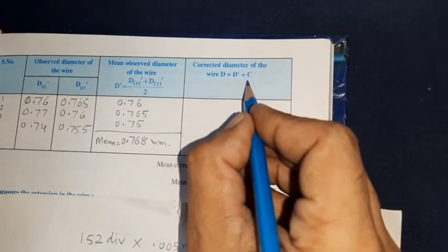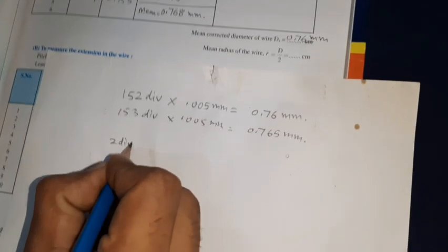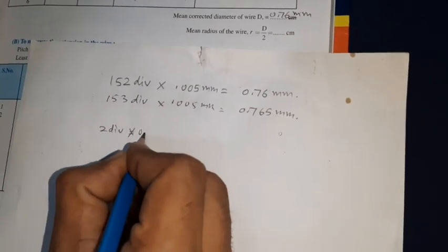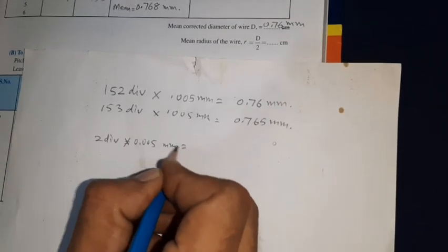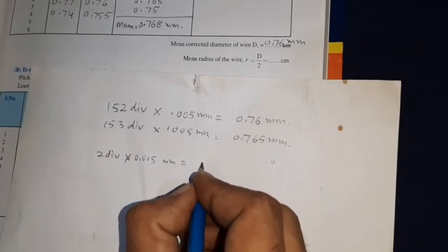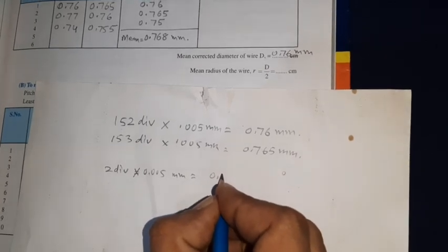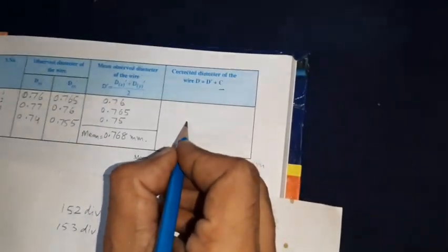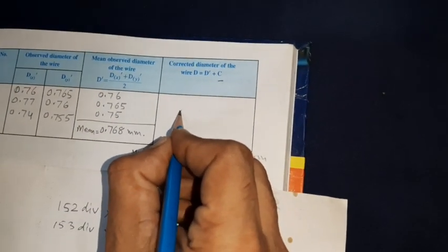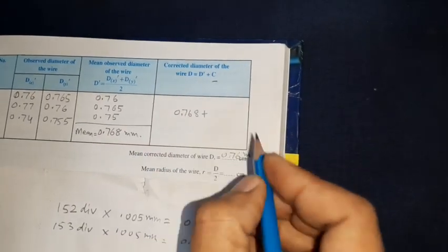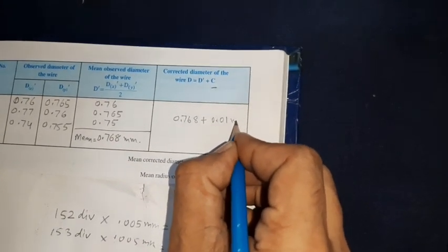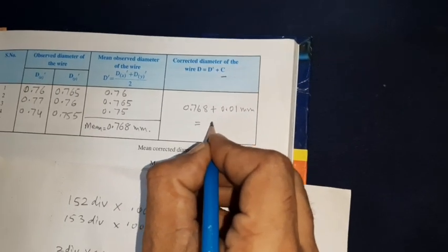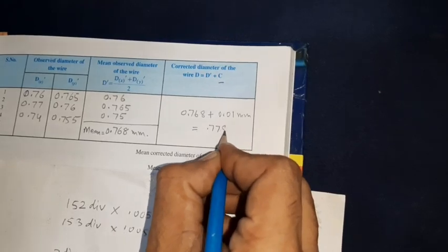So now we have to correct this diameter because we have a correction of two divisions. Two divisions will be equal to multiplied by 0.005 millimeters, so it will be 0.01 millimeters. We have to make a correction in this diameter, which will be 0.768 plus 0.01 millimeters, which will be equal to 0.778 millimeters.